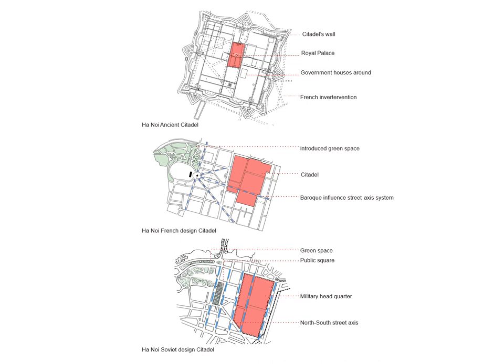These maps show the progression of the Hanoi Citadel during three periods: feudal, French colonial and Soviet. The ancient citadel was similar to the Chinese layout, with walls, a royal palace and government houses. The French design was a baroque-inspired urban layout with diagonal lines leading to visual landmarks and garden spaces. The Soviet design features north-south street access and a public square adjacent to military headquarters, where the military could quickly take control should there be any public demonstration.